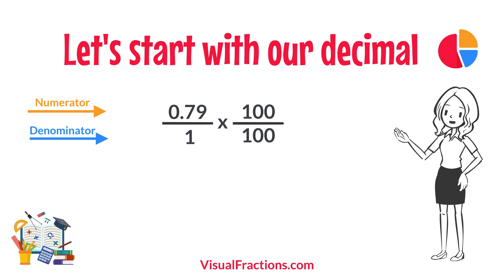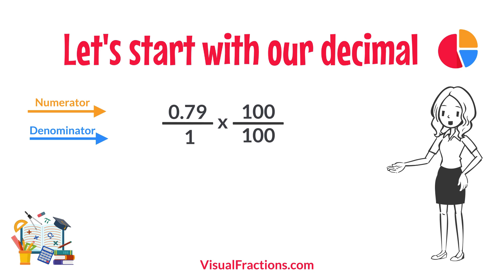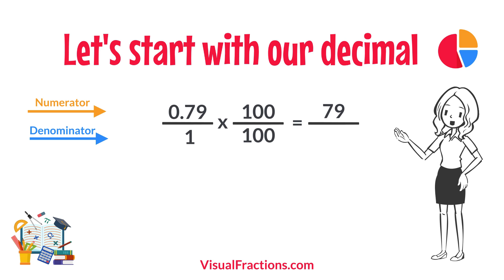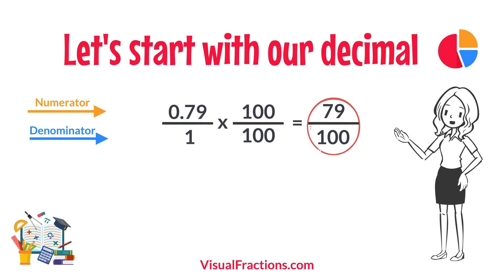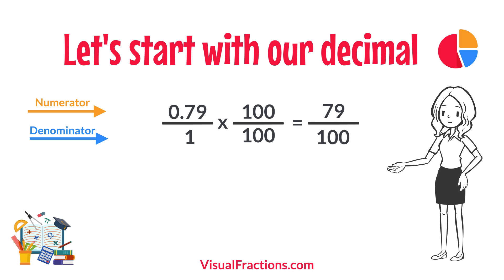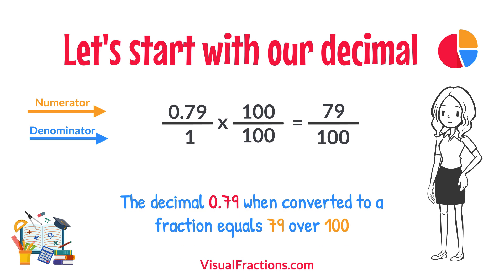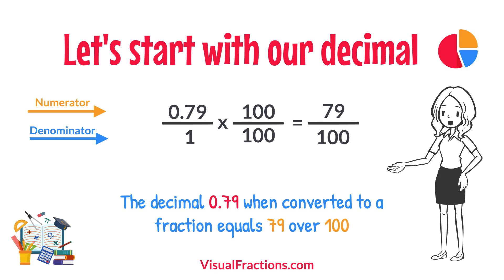So, 0.79 times 100 gives us 79, and 1 times 100 gives us 100. This translates 0.79 to the fraction 79 over 100. And there you have it — the decimal 0.79, when converted to a fraction, equals 79 hundredths.